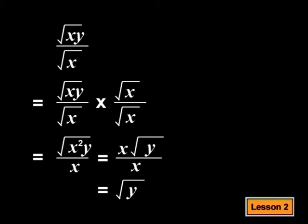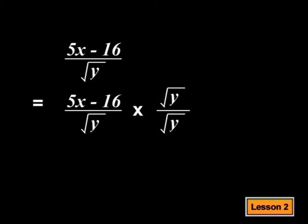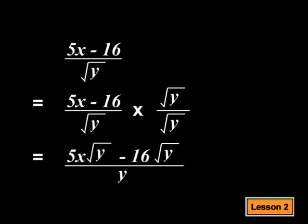Now, can we try one that's a little bit more difficult? I'll give it a try. There's a root y in the denominator. This means that I need to multiply the whole fraction by root y over root y. In the numerator, I distribute the root y into both terms to get 5x root y minus 16 root y. In the denominator, root y times root y equals y, which is a rational number. Excellent, Tabaha.